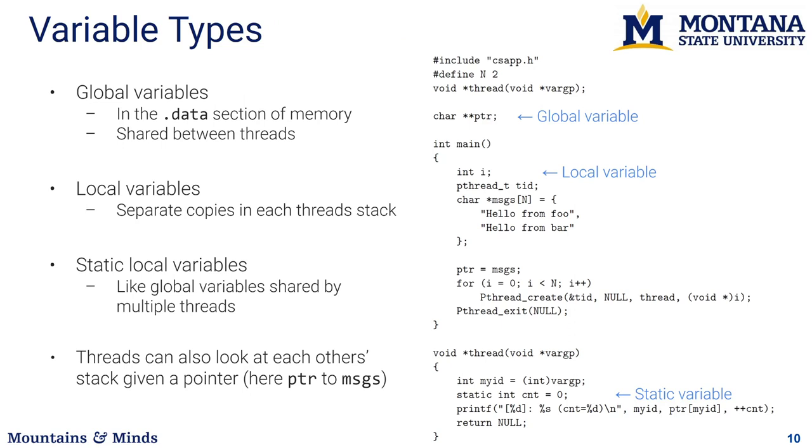Alright, so let's look at this in more detail. So, on the right we have an example from your book showing a threaded program that shares some variables. Okay, so we have global variables which are basically variables declared outside of the scope of any function. Okay, and any program or any function here has access to that variable.